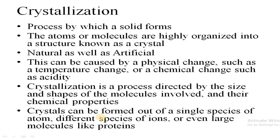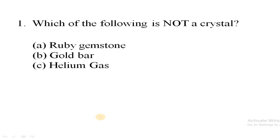Crystallization is a process in which a solid is formed where atoms or molecules are highly organized into a crystal structure. It can occur through natural or artificial processes and is caused by physical changes such as changes in temperature, pressure, and acidity. Crystallization is directed by the size, shape, and chemical properties of the molecules involved. Crystals can form from a single species of atoms, different species of ions, or even large molecules like proteins and polymers.